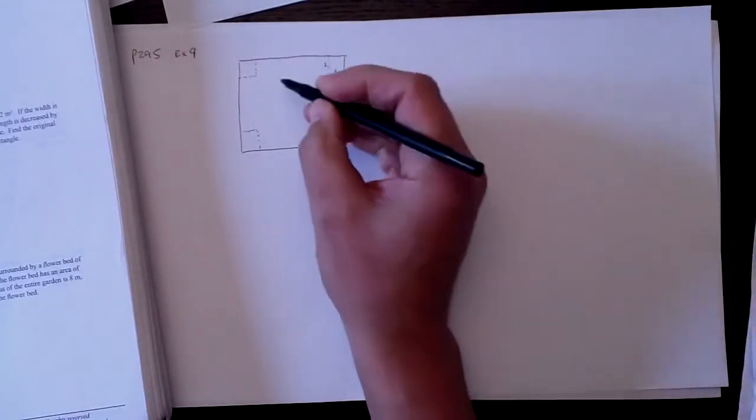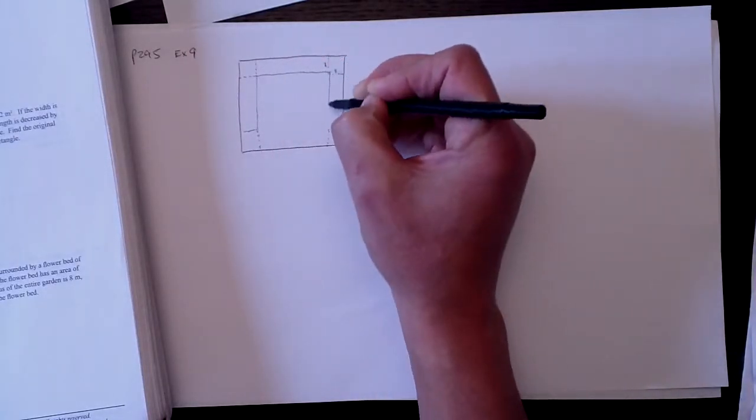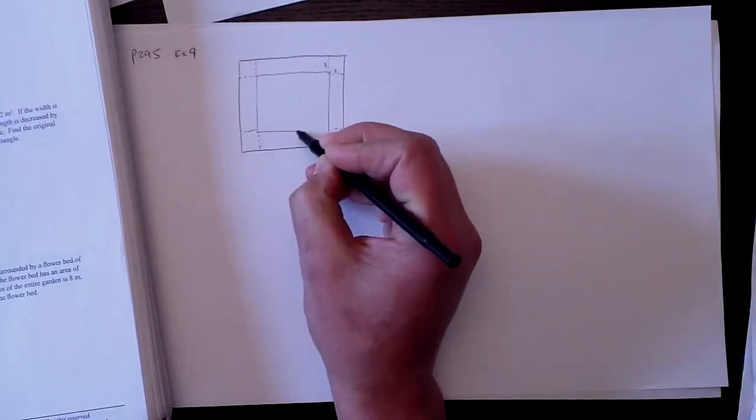Once we take those squares out of there, we're going to end up with an inner square, and we're going to turn up the corners and make a little tray.